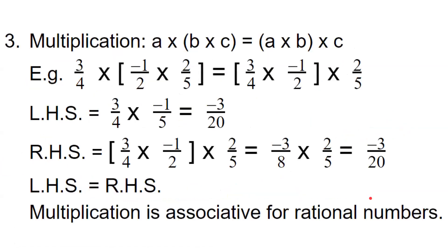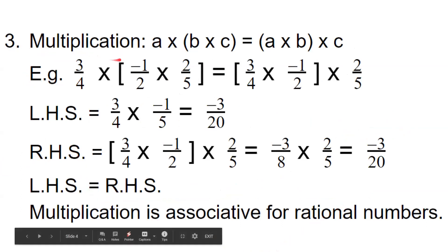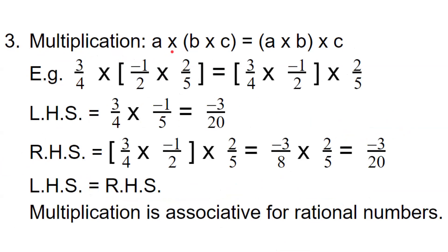Now let us discuss the third operation, that is multiplication. If A, B, C are any three rational numbers, A multiplied by (B multiplied by C) is equal to (A multiplied by B) multiplied by C. This is the associative property for multiplication. That is, to find the product of three rational numbers, either we can take the group of first and second then multiply with the third, or take the group of second and third then multiply with the first. Both cases, we will get the same answer. Let us verify with the help of an example.